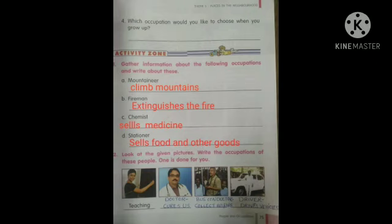Fourth one, stationer, sells food and other goods. Next exercise, fill in your book. Look at the given pictures. Write the occupations of these people. One is done for you. First picture is teacher picture, answer is teaching.